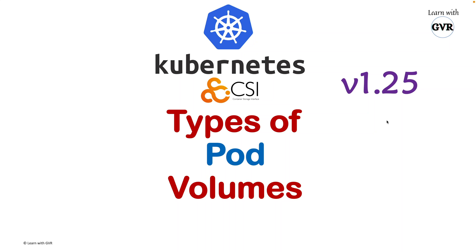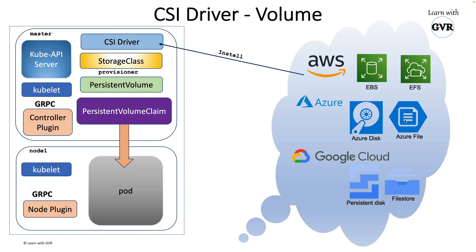Today's topic is the types of pod volumes as per Kubernetes 1.25. In the previous session, we learned about the CSI driver. If a particular pod wanted to use storage from AWS, Azure, or GCP, we can use the CSI driver storage class provisioner and ultimately mount a persistent volume claim, leveraging dynamic provisioning.